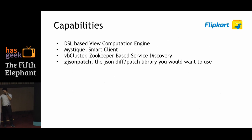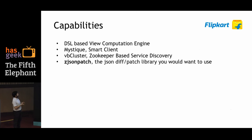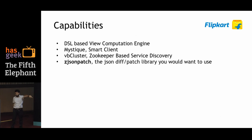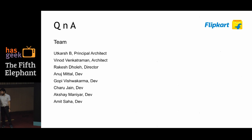The capabilities that came out of this work were: a view computation engine, a smart client called Mystique, ZooKeeper-based service discovery, and Z JSON Patch — which I already mentioned is open-sourced. We'll be looking to open-source Mystique and the VB Cluster very soon. Thank you — and this was the team.